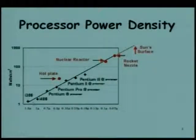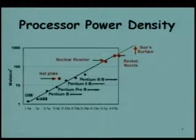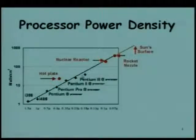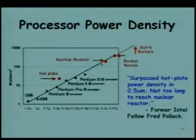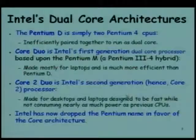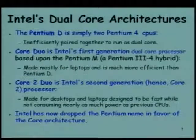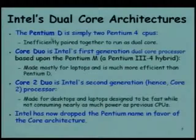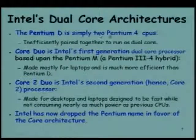We discussed the alarming proportion of processor power density, noting that power per unit area has already exceeded that of a hot plate with the Pentium 2, and has risen further approaching that of a nuclear reactor. We were reviewing the dual-core architectures which started with the Pentium D, which essentially was two Pentium 4 CPUs.